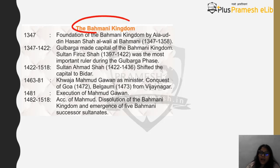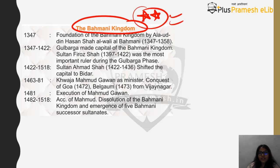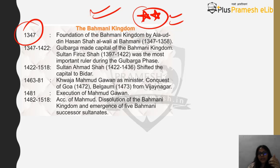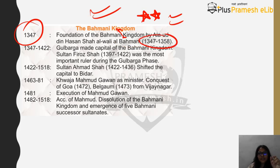After the Vijayanagara Empire, the Bahmani Kingdom is also important to study. UPSC has not asked questions on it yet, but many questions can be asked — so it becomes important from both perspectives. The Bahmani Kingdom was founded in 1347 AD by Alauddin Hasan Shah al-Wali al-Bahmani, and he ruled for about 10-11 years from 1347 to 1358 AD.